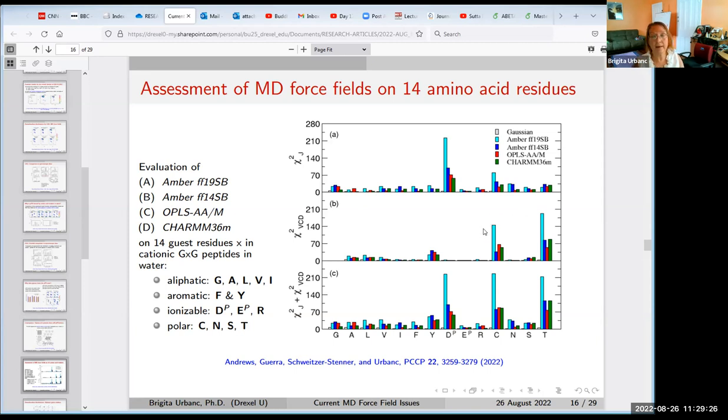Looking at the data in detail will just confuse you and bore you, so I don't want to do that. I just want to point out that first, the Gaussian model reproduces much better results than any MD force field. Second, there are specific amino acids for which the force fields are particularly bad. One is protonated aspartic acid—you see here the very large peaks. The other one is, for example, cysteine. Another one is threonine. In fact, all polar amino acids CNST are quite bad, not well reproduced.